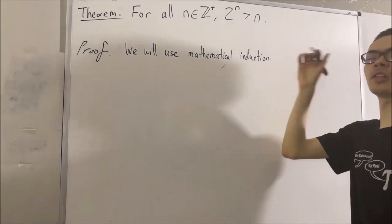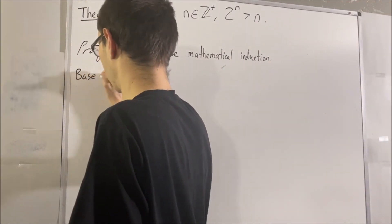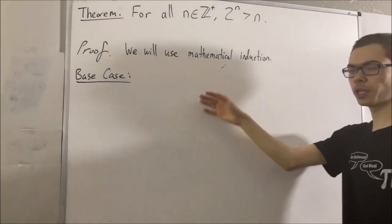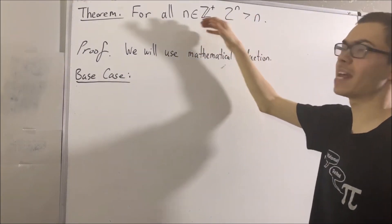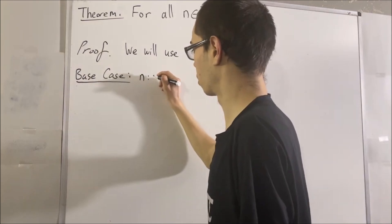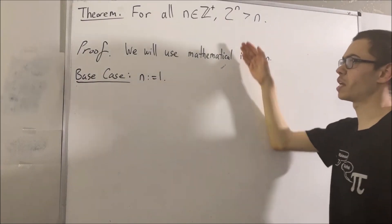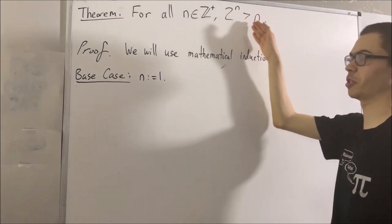So to start, let's prove the base case. Now, if you recall, in the base case, what we're trying to do is prove this in the case where n is equal to 1. So really, we're trying to show that 2 to the power of 1 is greater than 1.